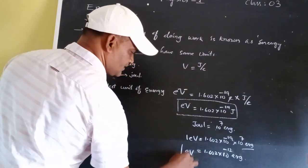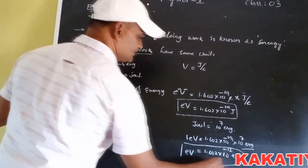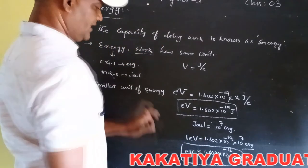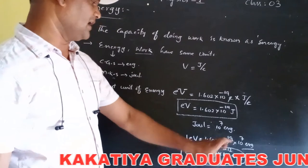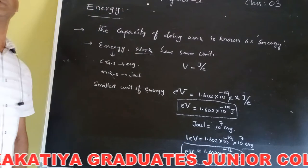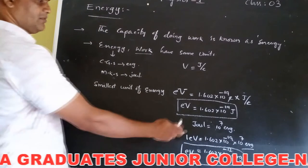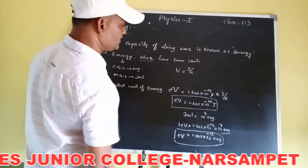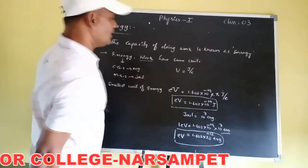So the smallest unit of energy is electron volt. In CGS units, its value equals 1.602 × 10⁻¹² erg. In MKS units, the value equals 1.602 × 10⁻¹⁹ joule.